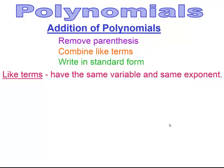When doing addition of polynomials, you'll have two polynomials, sometimes with parentheses around them. You're going to remove the parentheses, combine like terms, and write your answer in standard form — highest exponent to the constant. As a reminder, like terms have the same variable and the same exponent; you add or subtract their coefficients.